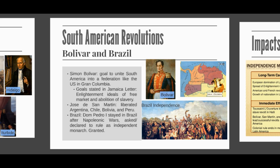Bolívar never accepted a crown, but he was instrumental in gaining independence for Venezuela, Colombia, Ecuador, and Peru. Bolívar himself was born in Venezuela in 1783 to a family whose ancestors had been village aristocrats in Spain. After considerable military successes fighting the Spanish in Latin America, his forces achieved the formation of a large area he called Gran Colombia. He hoped it would become a federation similar to the United States', based on Enlightenment ideals. He described himself as a liberal who believed in a free market and the abolition of slavery, and wrote these goals in his Jamaica Letter of 1815 — a very important document for AP World History students.